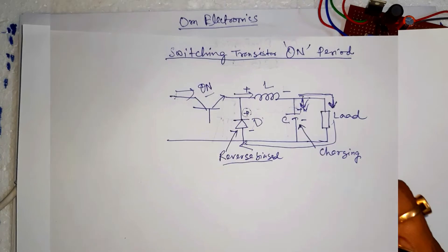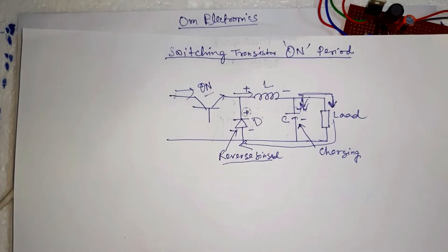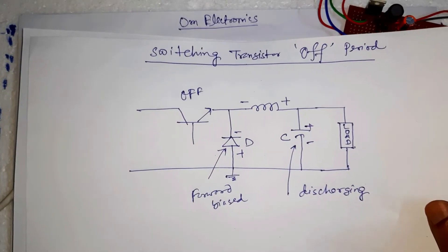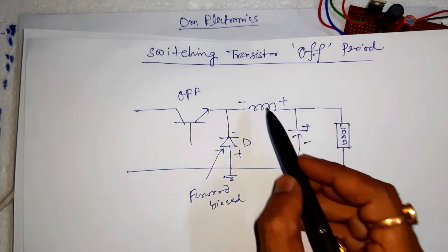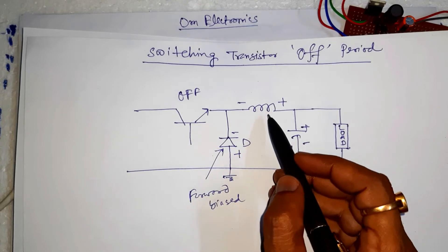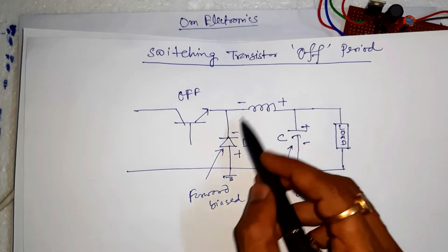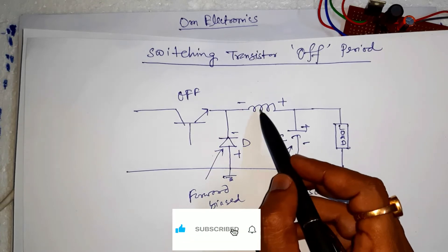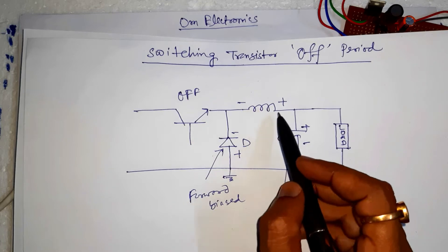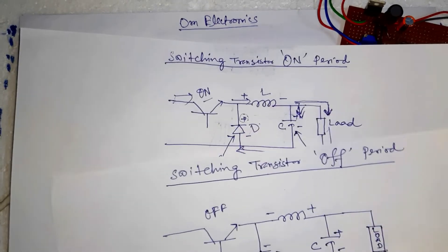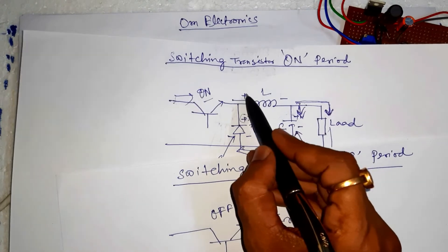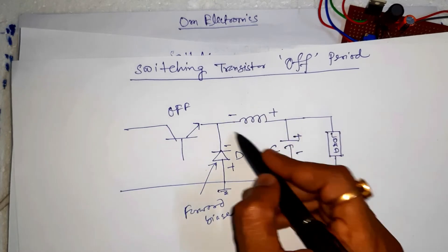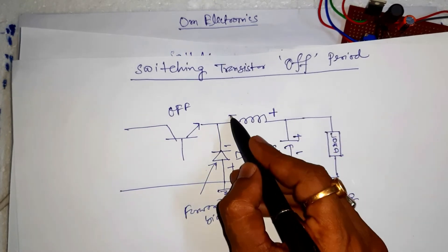When the transistor switches off, the energy stored in the magnetic field around the inductance is released back into the circuit. The voltage across the inductor — the back EMF — is now of reverse polarity. During the ON time the inductor has positive and negative polarity; during the OFF time the polarity reverses — this side becomes positive and this becomes negative.